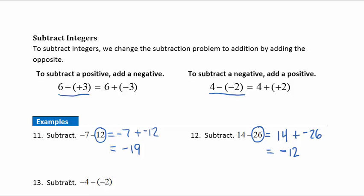Example thirteen: negative four minus negative two. The first stays the same, subtraction becomes addition, and subtracting negative two becomes adding positive two. Adding opposites — we have more negatives, in fact two more negatives, so the answer is negative two.